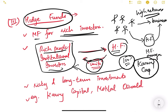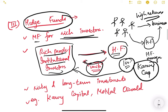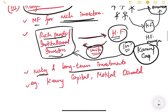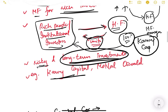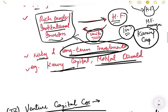Hedge funds are for rich people and institutional investors who want very high returns — like 30 to 40 percent. They invest in risky businesses and it is a long-term investment; you cannot get your money back after just one year. Examples of hedge funds in India are Karvy Capital and Motilal Oswal.